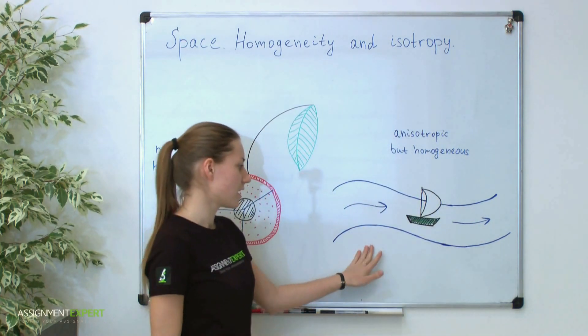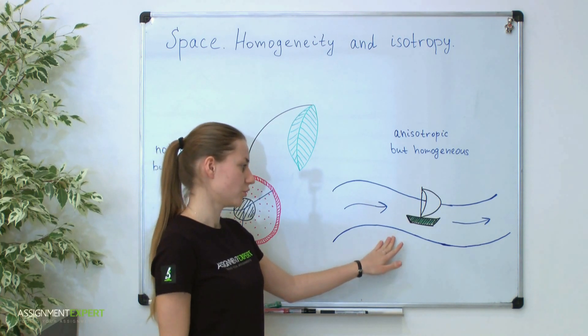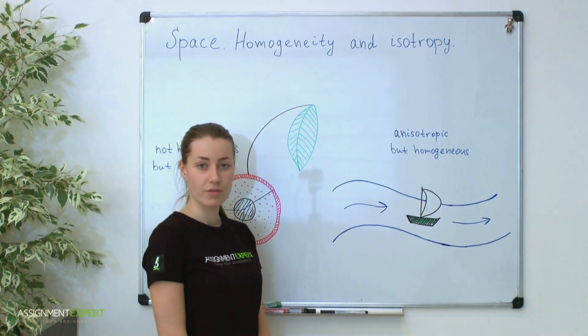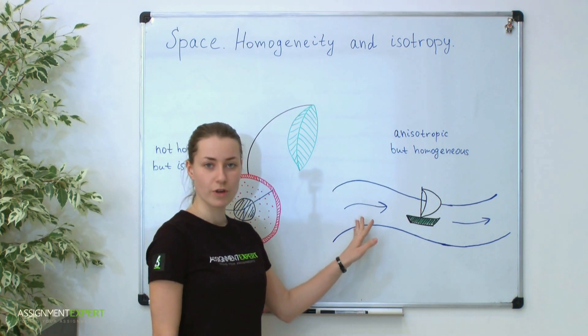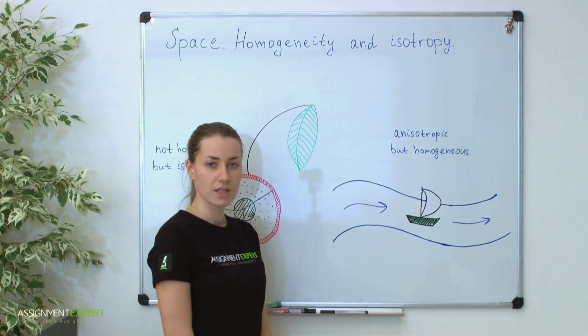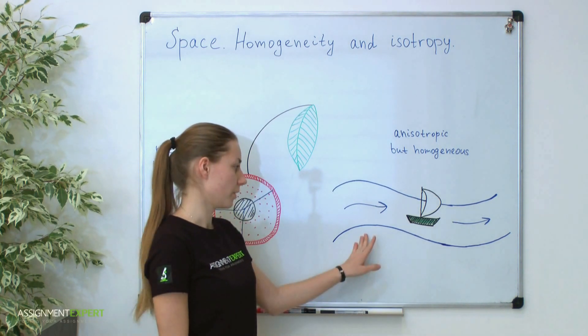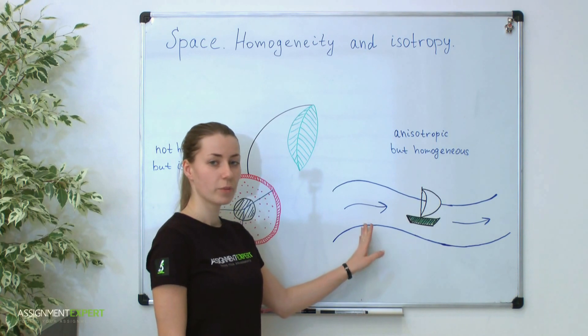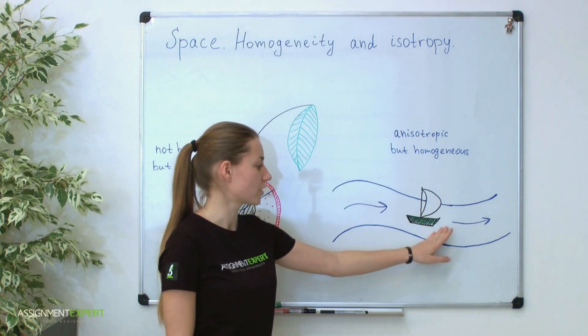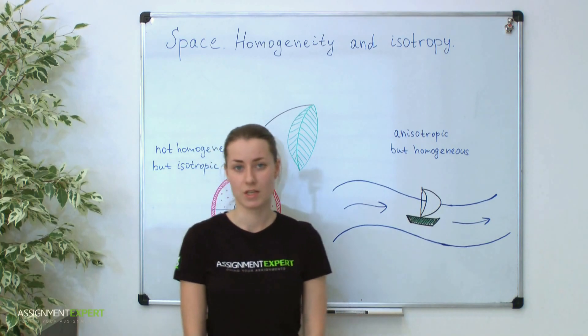But the second example is with anisotropy. Consider a river and its simplest property – a flow. Flow separates one preferred direction of a river and in this sense river is anisotropic. If you throw any object into the river, it will be carried along that specific direction. But, however, a river is still homogeneous.